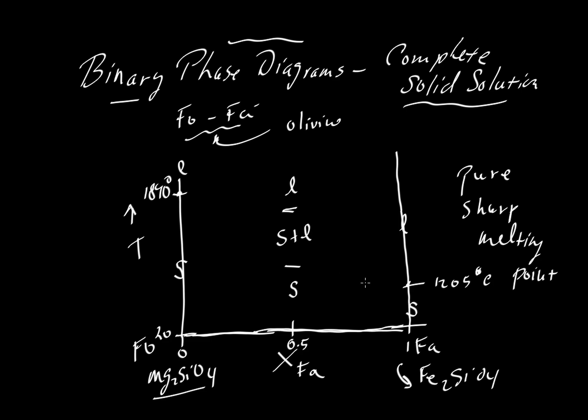If we get closer and closer to the end members, then these melting intervals become very narrow, and we can connect all the dots. Then we would have a melting curve.